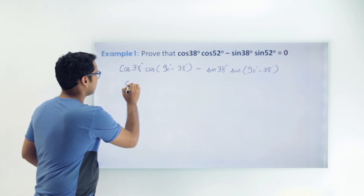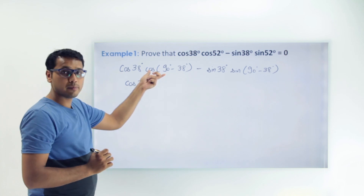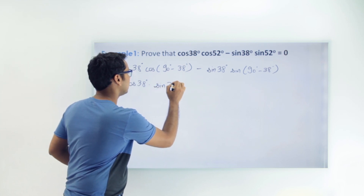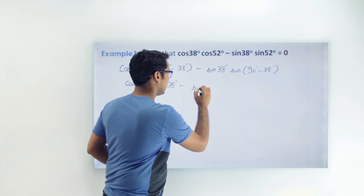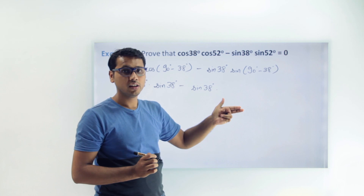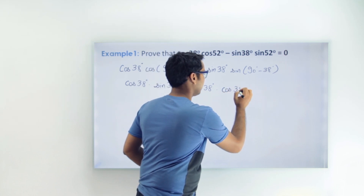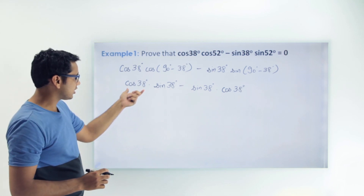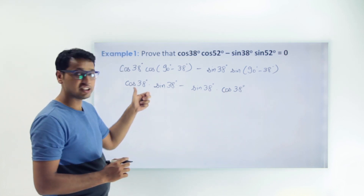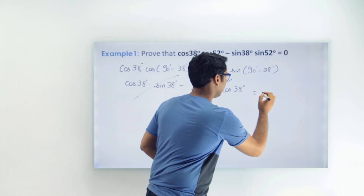So we can write: cos(38°) × sin(38°) minus sin(38°) × cos(38°). The complementary of sin is cos, so sin(90° − 38°) becomes cos(38°). Now if you see, this is cos(38) × sin(38) and this is sin(38) × cos(38). These two are equal, and if we subtract them we get zero — they cancel out and what remains is zero.